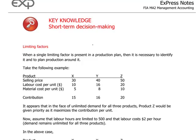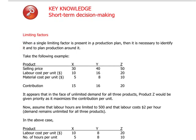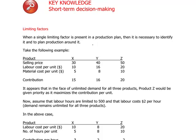Now let's turn our attention to some other examples of short-term decision making — one being the notion of limiting factors. When we have a single limiting factor in production, we have to plan our production around that factor to maximize performance. Suppose we had three products X, Y, and Z, with given selling prices, labor costs per unit, material costs per unit, and contributions per unit. On the face of it, product Z is most interesting because it has the highest contribution per unit.